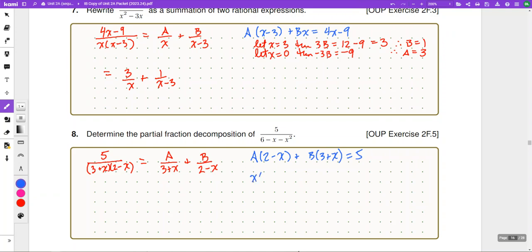If we consider our x terms, we're going to have b minus a. If we consider our constants, we're going to have 2a plus 3b. So, that means that a must equal b. And that's because b minus a must be equal to 0. And 2a plus 3b must be equal to 5. So, if b minus a is 0, then b and a are the same value.